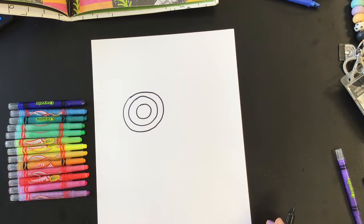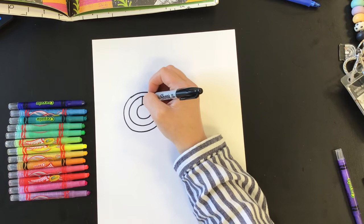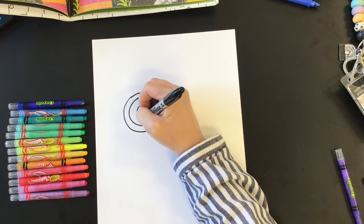So now that I have a few concentric circles, now I can start thinking about a pattern. Maybe in this middle row I want to make just simple straight lines. If I start doing straight lines in one area, I'm going to go all the way around.